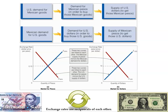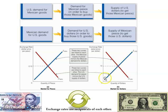Let's understand the process of engaging in these markets. If there is U.S. demand for Mexican goods — whether you want to travel to Mexico or buy something from Mexico — that creates a demand for pesos, since you need pesos to buy the goods. This is where the demand curve in the peso market comes from. Simultaneously, it creates a supply of dollars in the dollar market, because you have to supply your dollars to get those pesos.